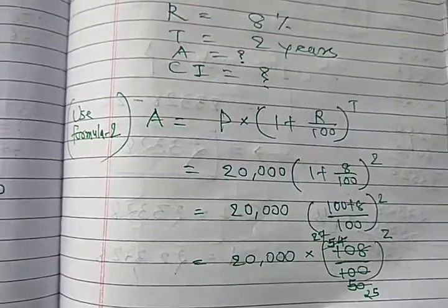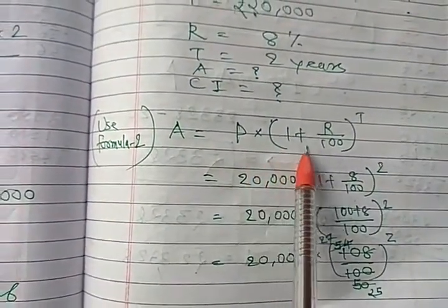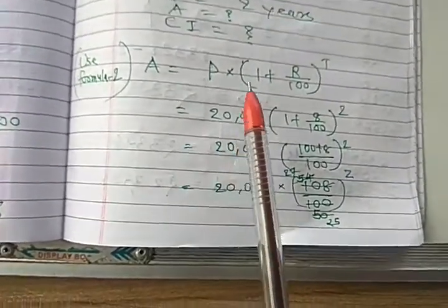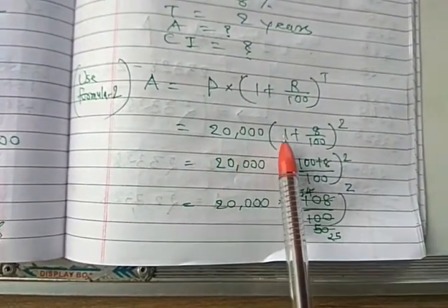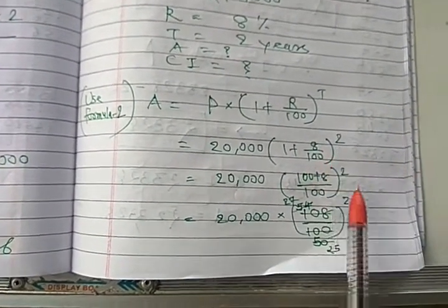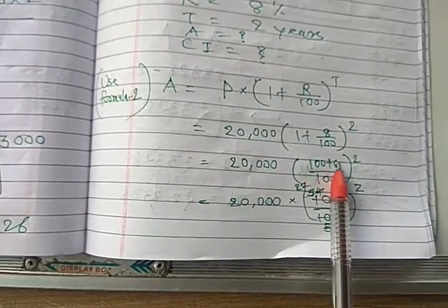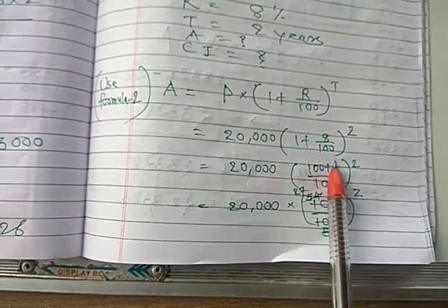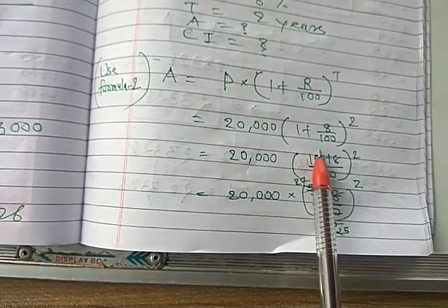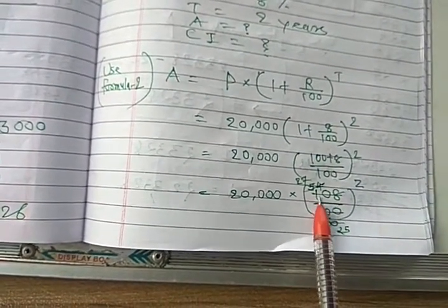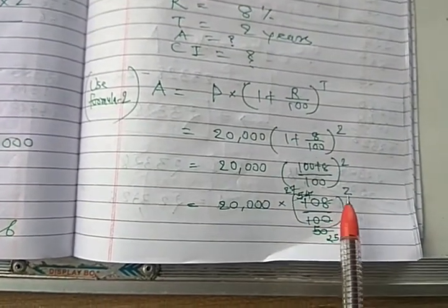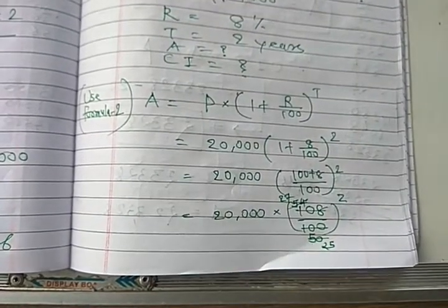A equal to P into 1 plus R upon 100 to the power of T. This is yearly, no problem. So put value 20,000 into bracket 1 plus, and R value 8 upon 100 to the power of 2. Now you have to count this term first, 1 plus 8 upon 100. Take LCM. So 100 plus 8 upon 100, 100 LCM. So 108 upon 100. Simplify this, you will get 27 upon 25 whole square.